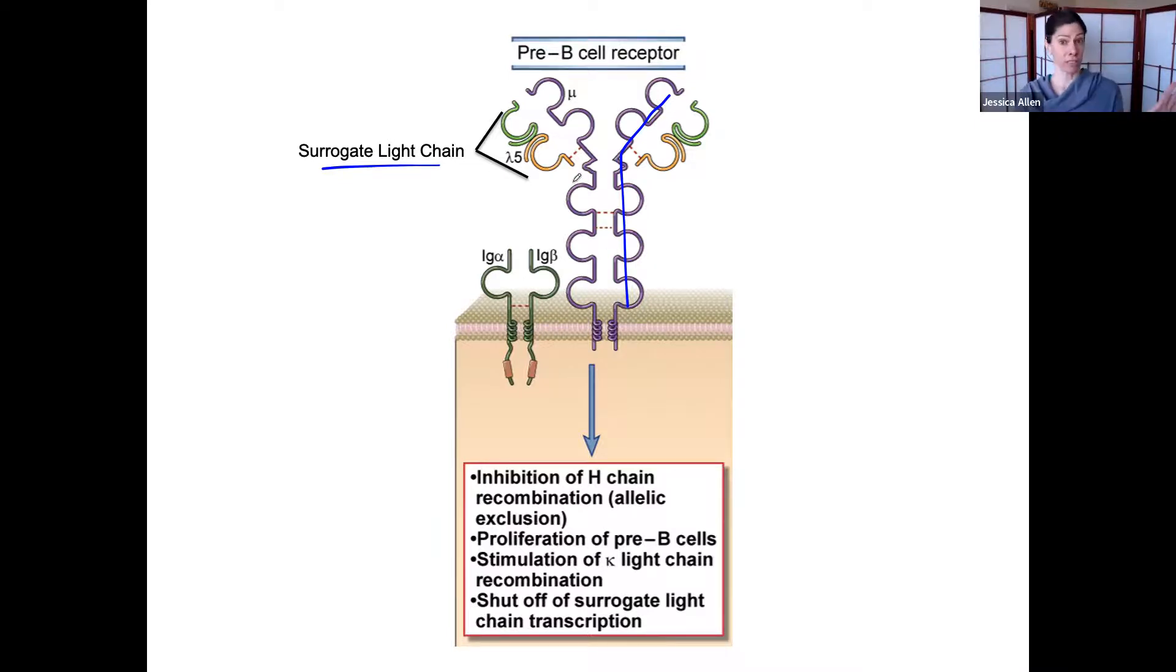Something to note is that this heavy chain needs to be able to not have like stop codons added or some problem, needs to make an actual heavy chain. It also needs to be able to interact with proteins called IG alpha and IG beta.